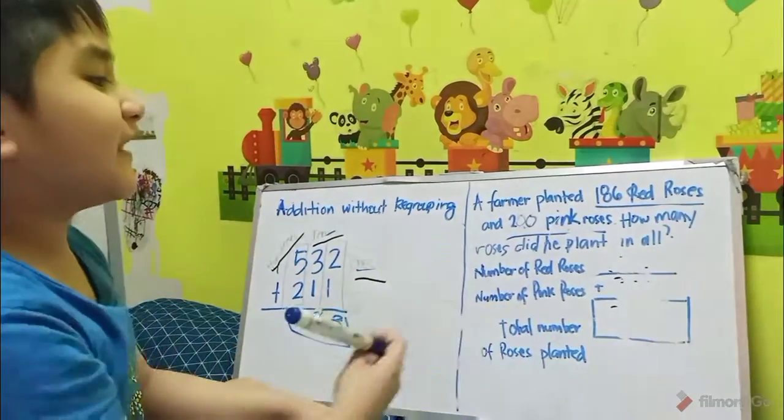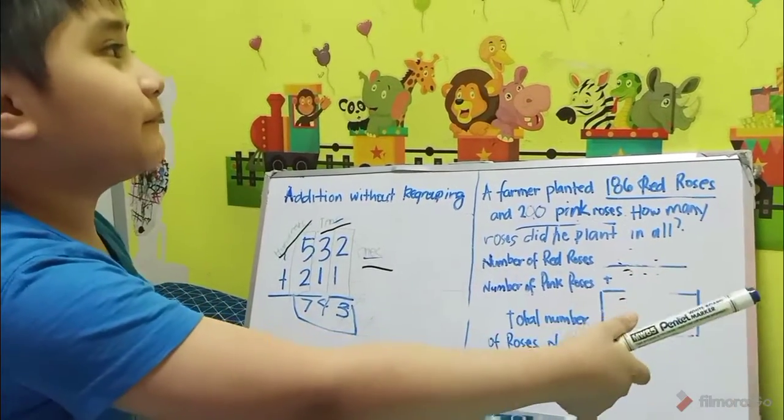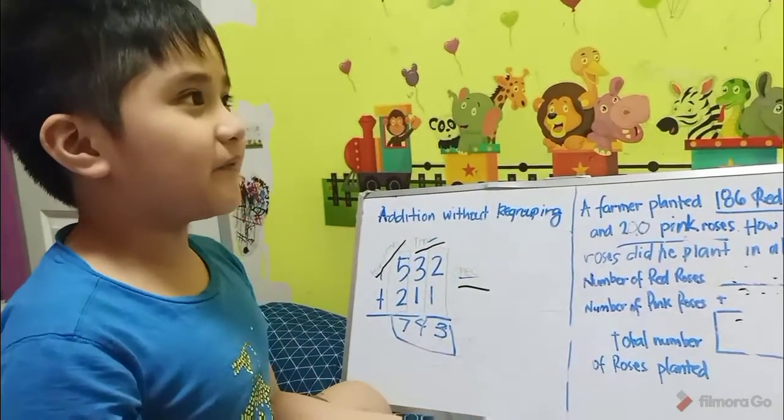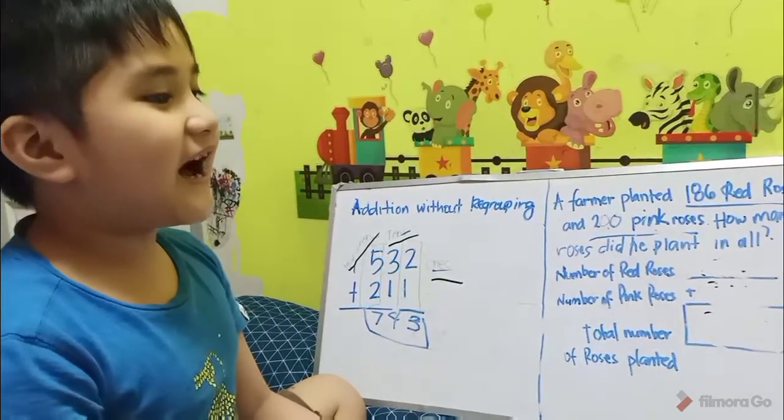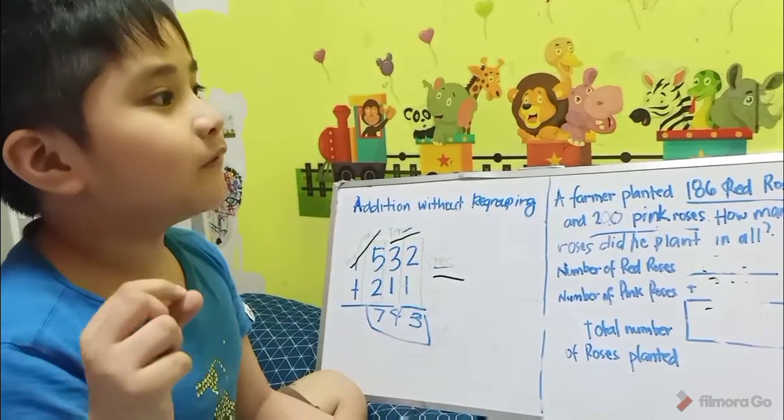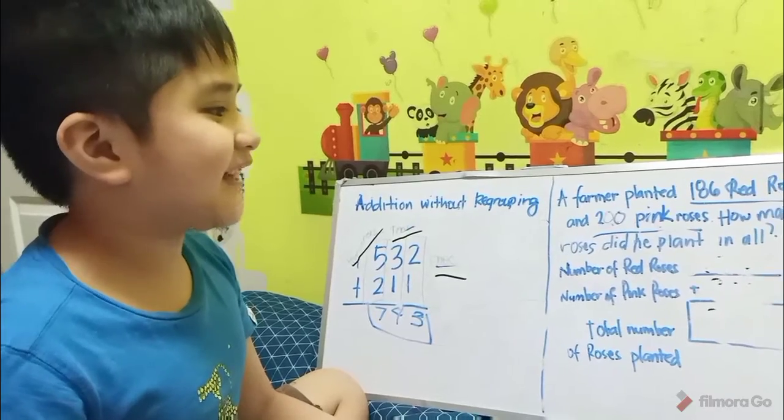Since 200 is identity property. What is identity property? Identity property is when you add numbers with 0, the sum or total will be always the same.